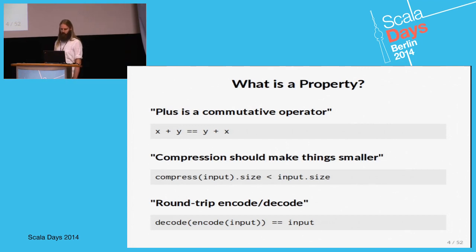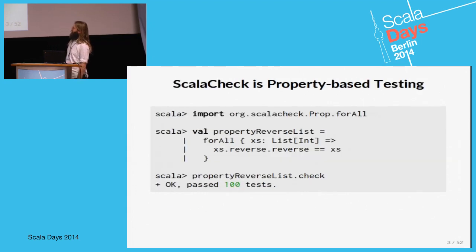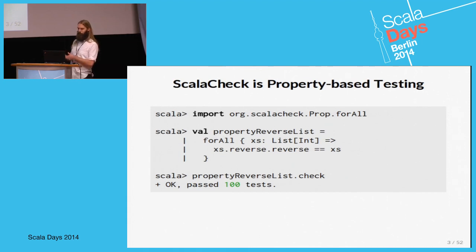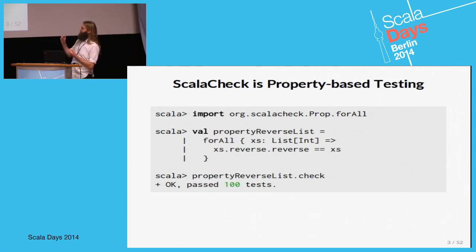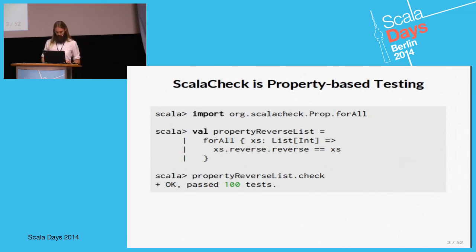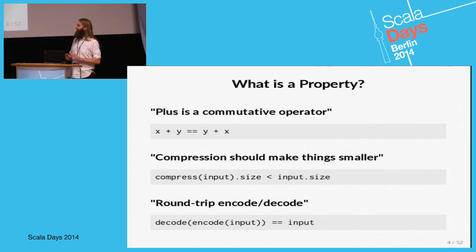What ScalaCheck provides is three things. In this example it comes up with lists of integers completely on its own, so it has support for generating ordinary Scala types. It also has a small language for defining your own data generators, and a language for describing your assertions — often basically boolean expressions but with some nice extras. I'm not going to talk more about property-based testing and traditional ScalaCheck testing today.